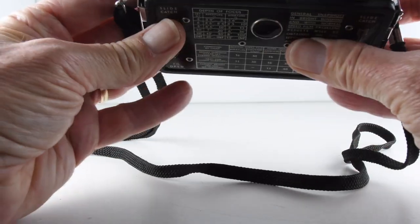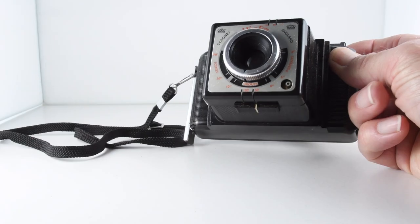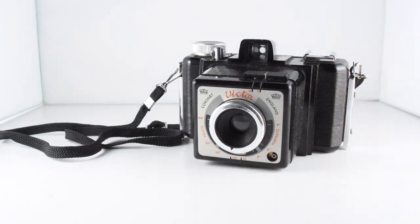There we go. Excellent. So there we go. That is the Coronet Victor 127 film format and that has been camera number 310 of 365.